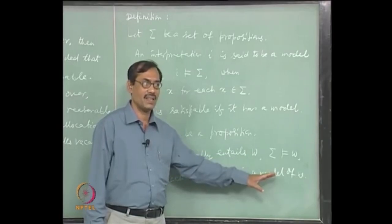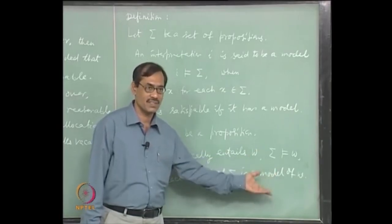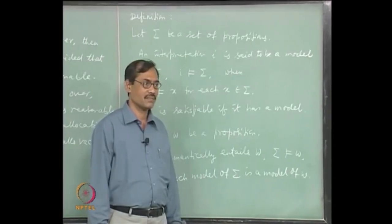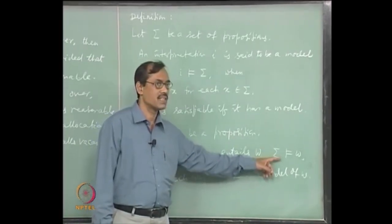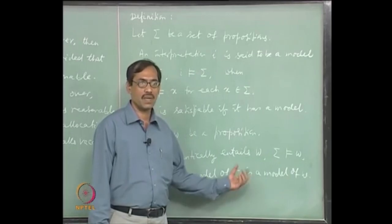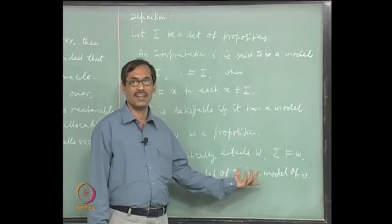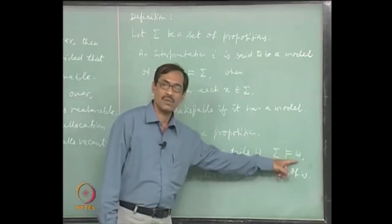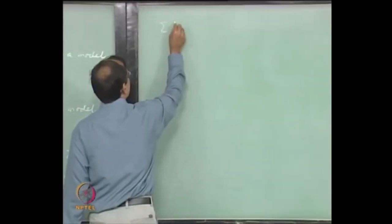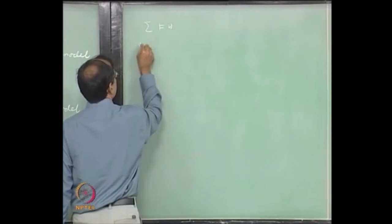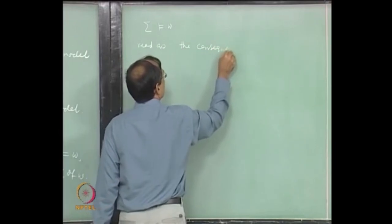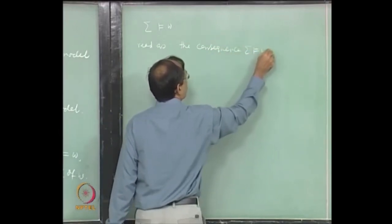We introduce cryptically the notion of consequence. We say that the consequence 'sigma entails w' is valid, to mean that sigma entails w. The adjective 'consequence' indicates we do not yet know whether it is valid or not. Once it is valid, we can write it as sigma entails w without the adjective. Whenever sigma entails w, we read it as: the consequence sigma entails w is valid.